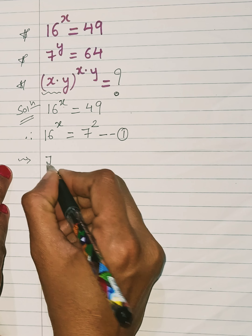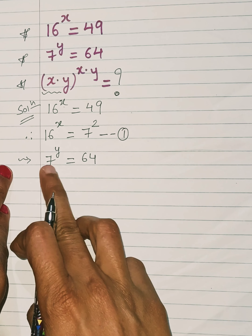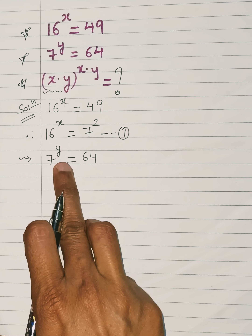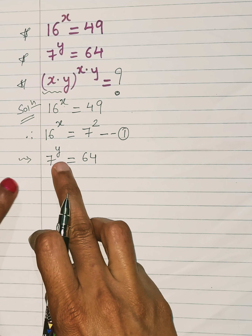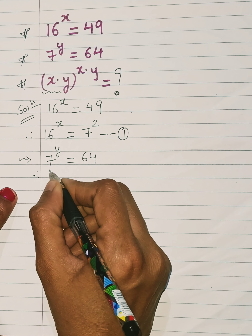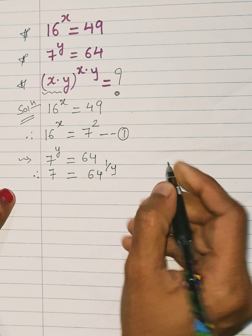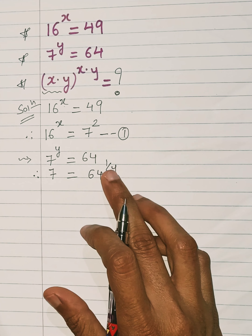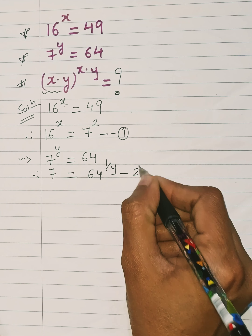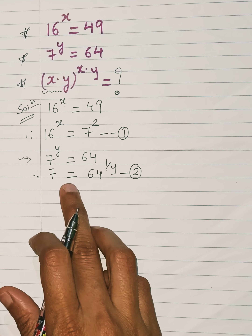The second equation is 7 raised to y equals 64. We shift y from the power position, giving us 7 equals 64 raised to 1 over y. So this is our second equation, where we have an expression for 7.